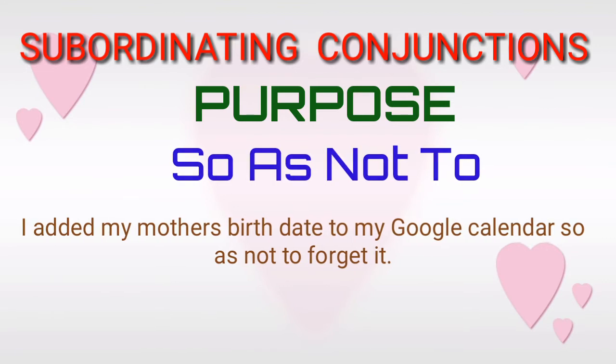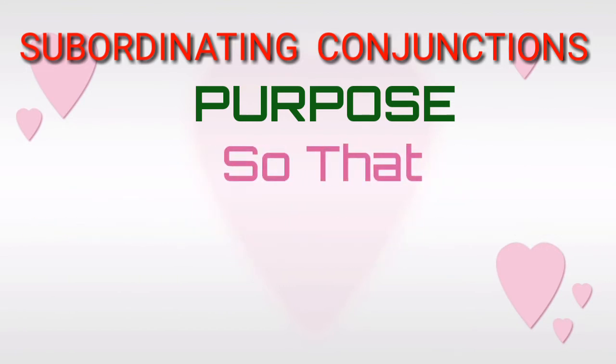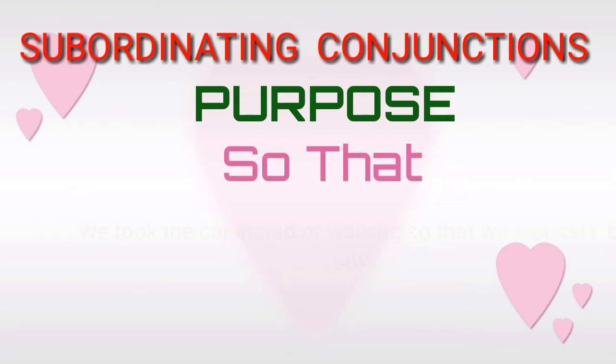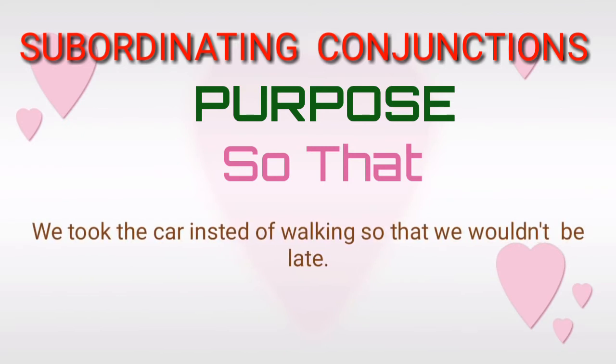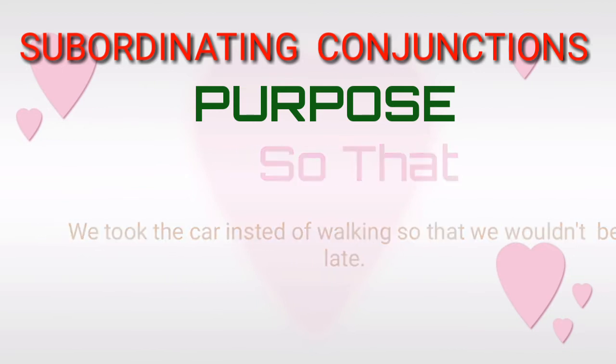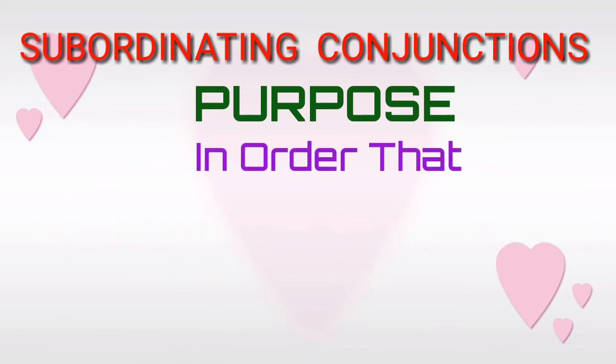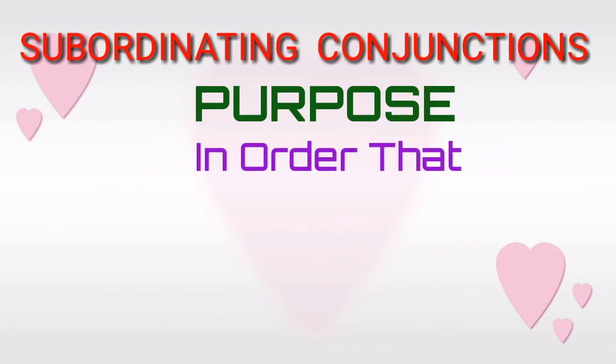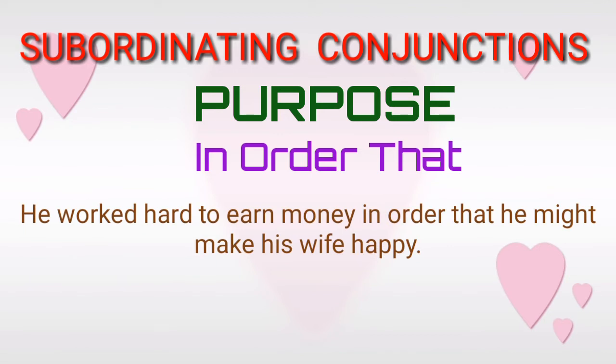Subordinating conjunctions of purpose — 'so that.' For example: 'We took the car instead of walking, so that we wouldn't be late.' Subordinating conjunctions of purpose — 'in order that.' For example: 'He worked hard to earn money, in order that he might make his wife happy.'